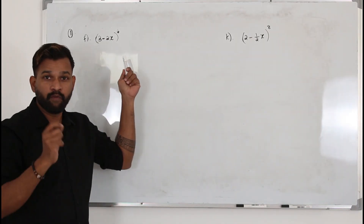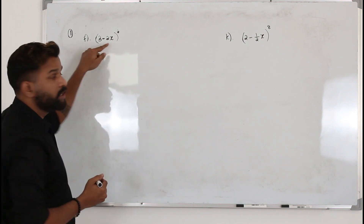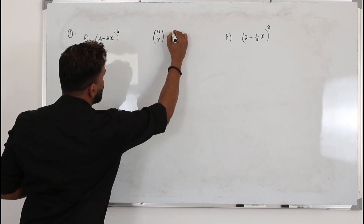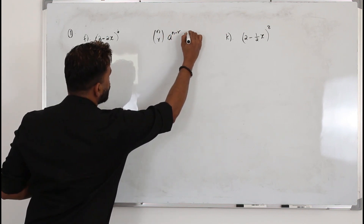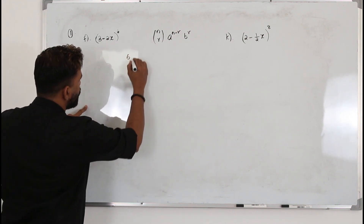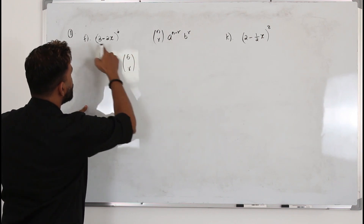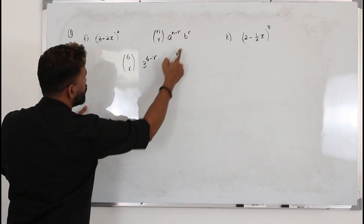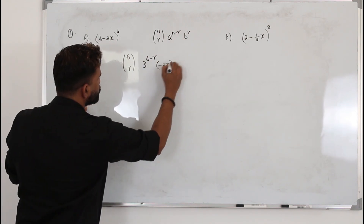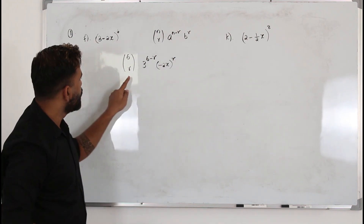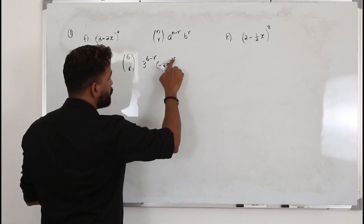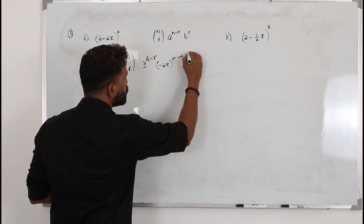Again, here they want you to find the coefficient of x³. We use the general term nCr · a^(n−r) · b^r. Here n is 6, so it's 6Cr. A is the first term, 3^(6−r); B is the second term — take it together with the negative sign. To find the coefficient of x³, the power of x must be 3, so r must be 3.